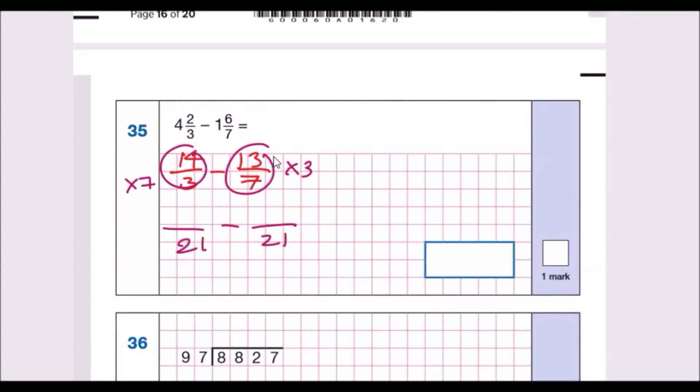So now we've got 7 times 14: 10 times 7 is 70, 4 times 7 is 28, so that's 98. 13 times 3: 10 times 3 is 30, 3 times 3 is 9, so 39. Now just subtract them: 98 take away 39. 8 take away 9 you can't do, borrow - the 9 becomes an 8, carry the 1. 18 take away 9 is 9, 8 take away 3 is 5, so it's 59 over 21. I don't think we can simplify that further.